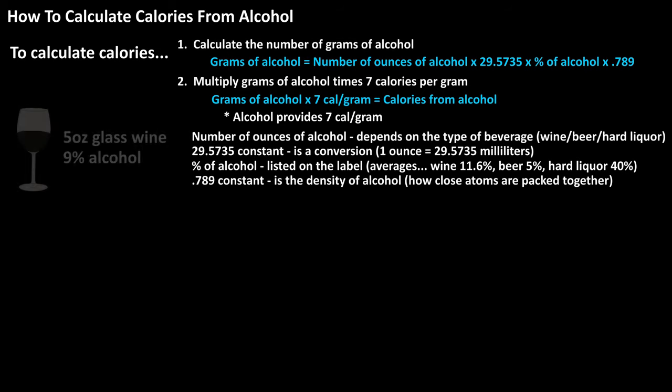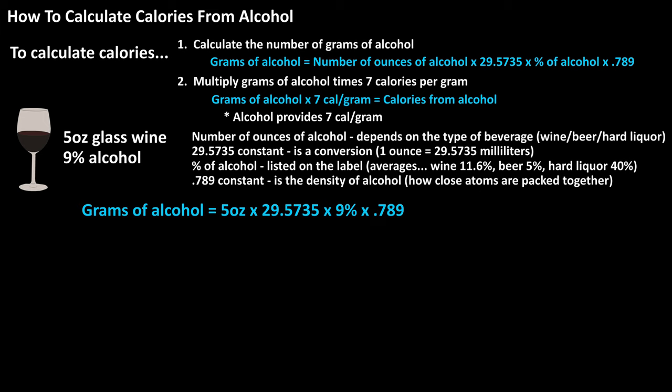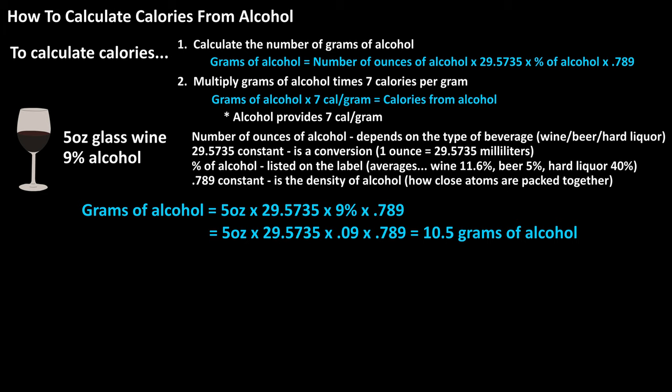Let's go through an example for a typical 5-ounce glass of wine that has 9% alcohol. We start by calculating the number of grams of alcohol. Using the formula: grams of alcohol equals 5 times 29.5735 times 0.09 — converting 9% to a decimal by moving the decimal two places to the left — times 0.789. This calculates to 10.5 grams of alcohol, rounded off.